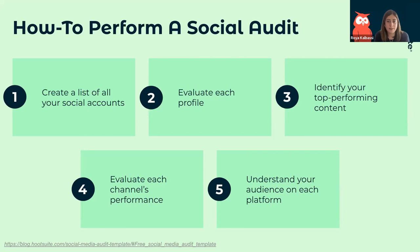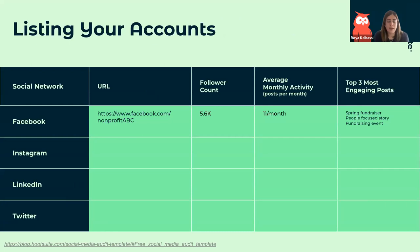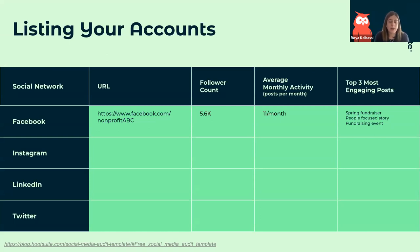First, you want to have a template — it can be as simple as what's shown on screen, or you can use one of Hootsuite's blog templates that includes guidance on how to best audit your social media platforms. Start by listing your social accounts with a URL for each, so you can directly access each page and gather additional information. Then record a follower count for each profile to know which has more visibility and how you're tracking compared to the past.